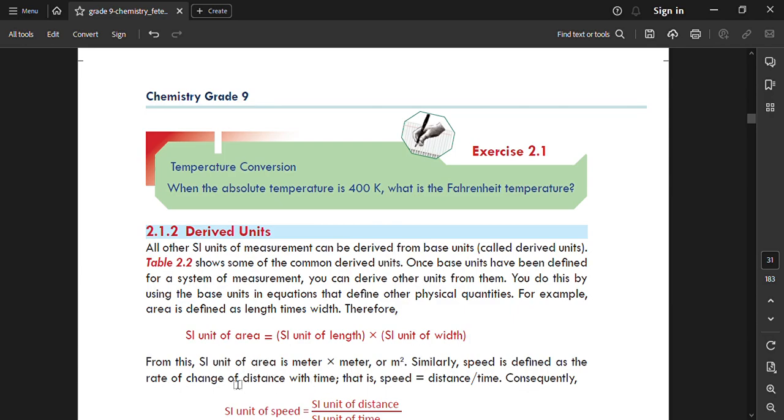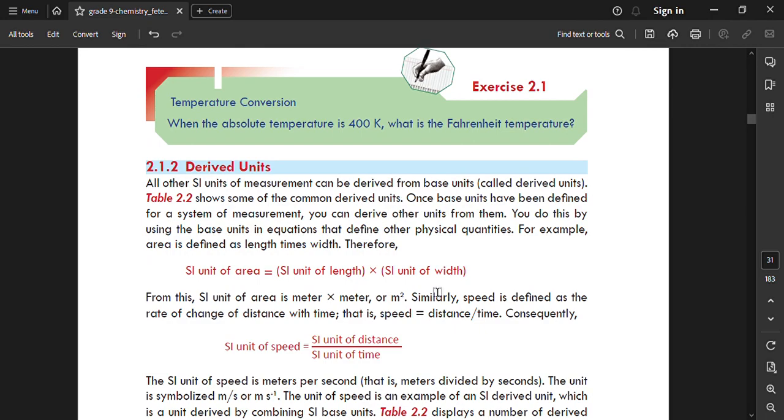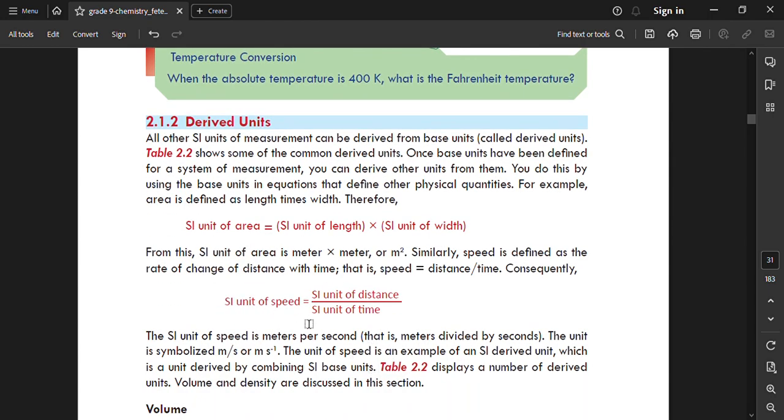For example, area is defined as length times width. Therefore, SI units of area equal SI units of length times SI unit of width. So SI units of area is meter times meter, or meter squared. Similarly, speed is defined as the rate of change of distance with time. Speed equals distance over time, so SI units of speed is meters per second.